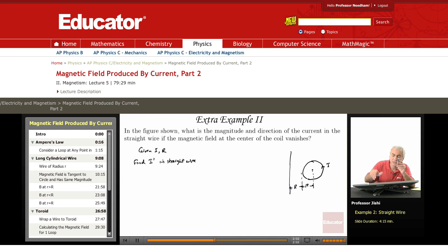Because if I put the current up, then the field will be into the page. So the current I prime must be up.